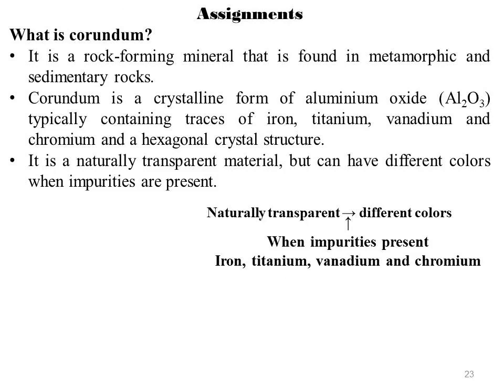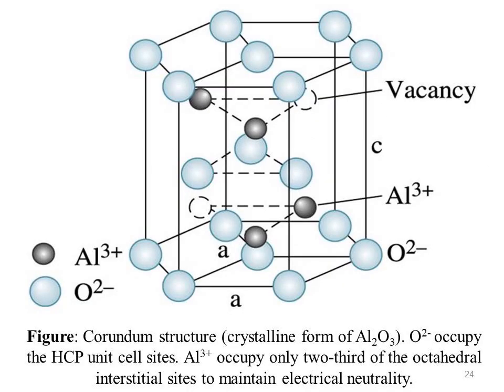What is corundum? Corundum is a rock-forming mineral found in metamorphic and sedimentary rocks. Corundum is the crystalline form of aluminium oxide, typically containing traces of iron, titanium, vanadium, and chromium, and has a hexagonal crystal structure. It is a naturally transparent material but can have different colors when impurities are present — the color changes depending upon the metal present as impurities. This is the structure of corundum, the crystalline form of aluminium oxide.